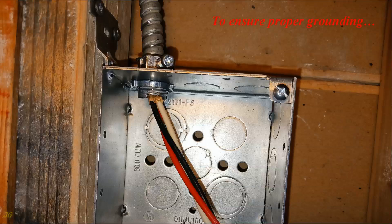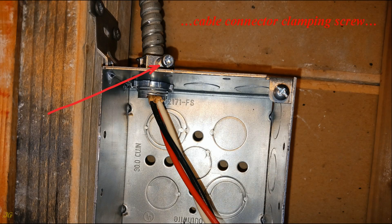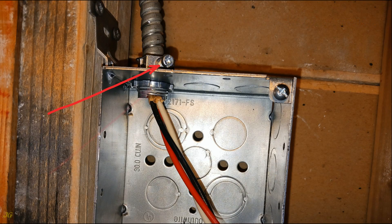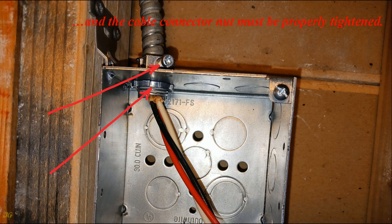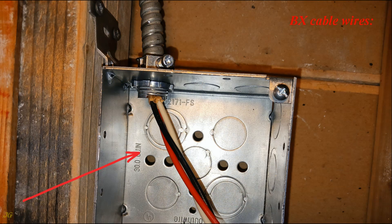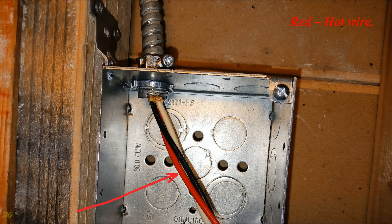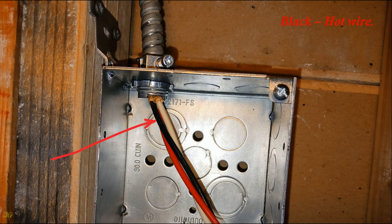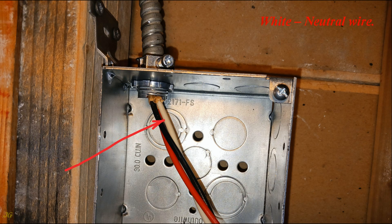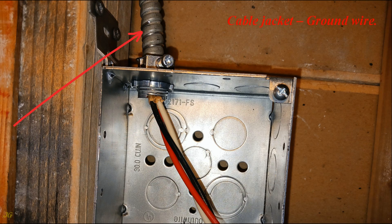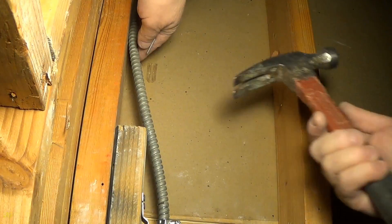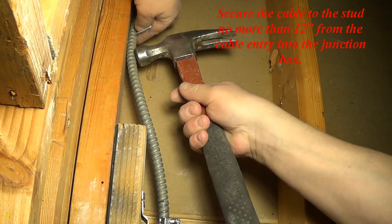To ensure proper grounding, cable connector clamping screw and the cable connector nut must be properly tightened. BX cable wires: red hot wire, black hot wire, white neutral wire, cable jacket ground wire. Secure the cable to the stud no more than 12 inches from the cable entry into the junction box.